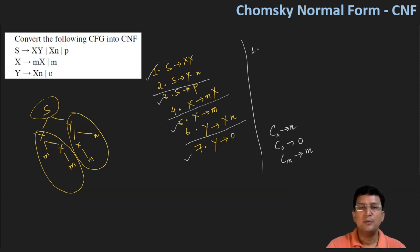Let's rewrite production 1: S produces XY, it's already alright. Production 2: S produces X followed by n, which we replace with Cn. Production 3: S produces p, which is already in Chomsky normal form.